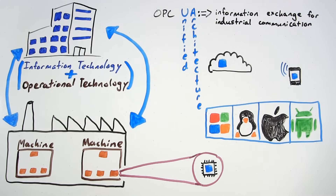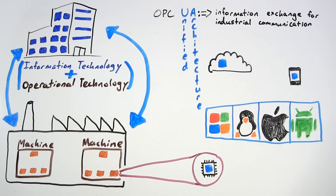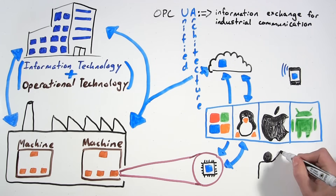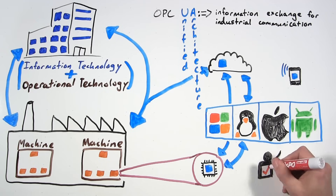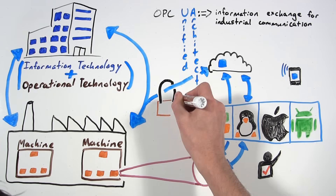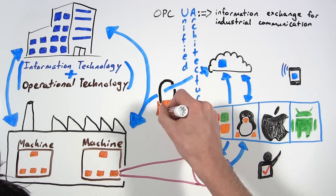OPC UA is equally suited in a closed network or utilized via the internet. Security is baked into the protocol for access control, authentication, and encryption. Because of its flexibility,